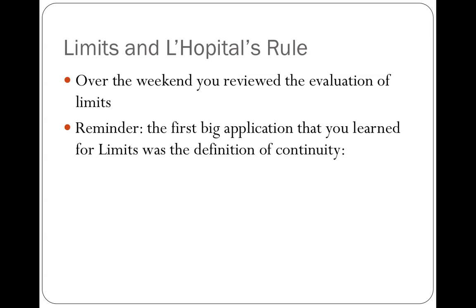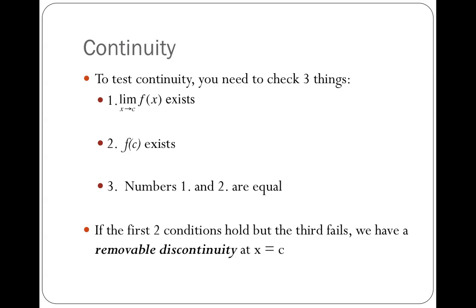Before we do that, I want to remind you about the definition of continuity — a concept that deals with limits that your homework over the weekend didn't cover. To test for continuity at some x value c, we have to check three things: that the limit as x approaches c of that function exists, that f(c) itself exists, and that the limit as x approaches c of f(x) and f(c) are equal. So the limit needs to exist there, the function needs to exist there, and the limit and the function need to equal each other at that point.